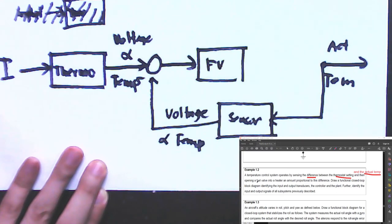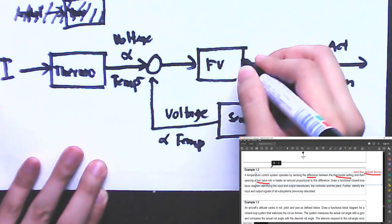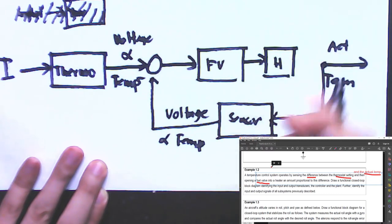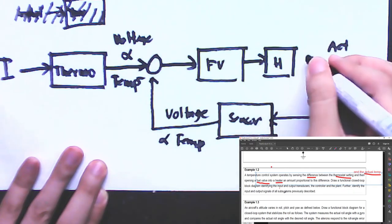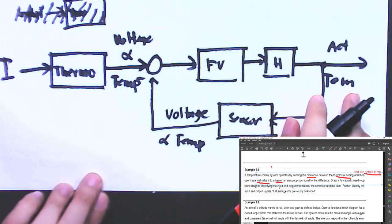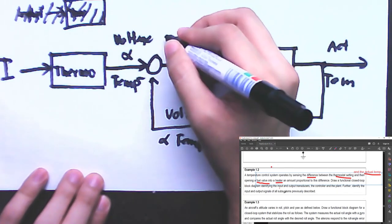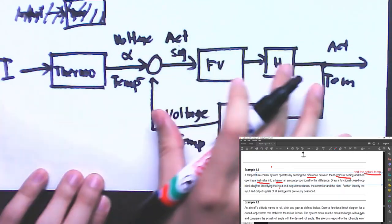The difference between the two voltage signals will drive the fuel valve. This difference is the actuating signal, and the valve controls the amount of fuel.